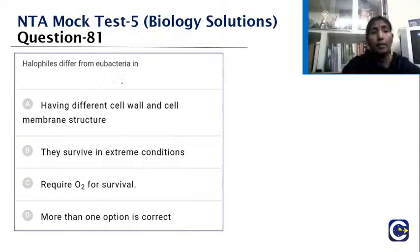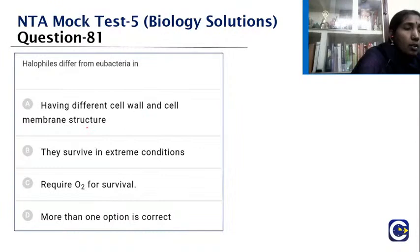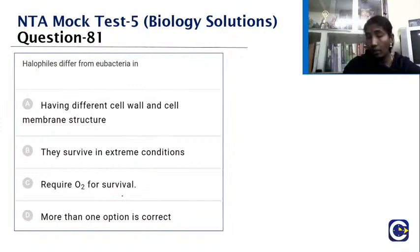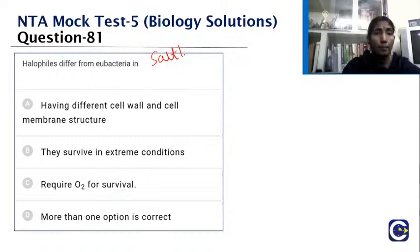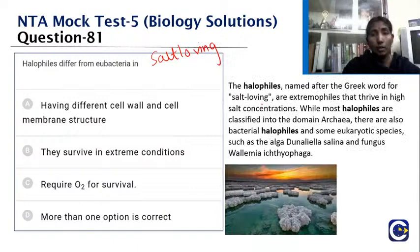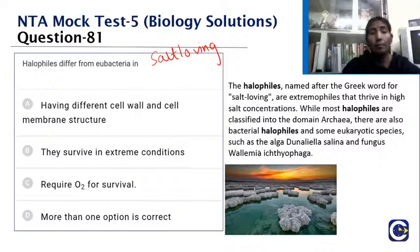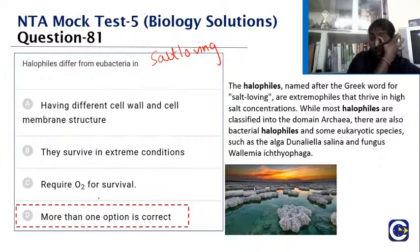Halophiles differ from eubacteria in more than one way. Halophiles ('salt-loving') are extremophiles that thrive in extreme salt concentrations. Most belong to domain Archaea, though some bacterial and eukaryotic halophiles exist (e.g., algae Dunaliella, fungus Wallemia). They differ from eubacteria in cell wall and membrane structure, survive in extreme conditions, and more than one option is correct.